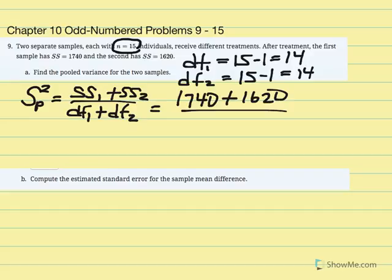Over degrees of freedom 1 (14) plus degrees of freedom 2 (14). In our calculators, 1740 plus 1620 divided by 14 plus 14, which is 28, we get 120. So the pooled variance is equal to 120.